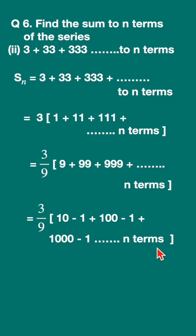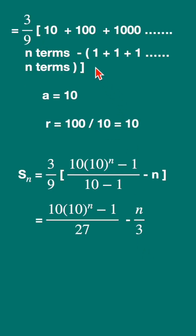Here you can see 10 plus 100 plus 1000 dot dot minus 1. If you take out minus sign outside the bracket, it will be 1 plus 1 plus 1 up to n terms. I have written it down 3 upon 9 into 10 plus 100 plus 1000 dot dot n terms, minus I've taken the minus sign outside, so 1 plus 1 plus 1 up to n terms.